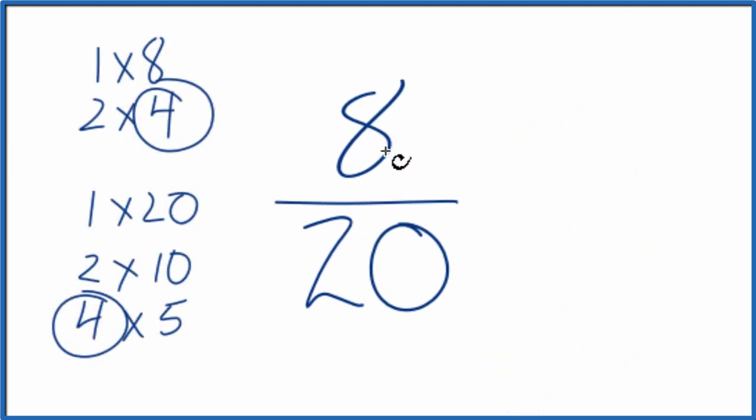When we divide 8 by 4, we get 2. And then when we divide 20 by 4, we get 5. So 8/20 is equal to 2/5.